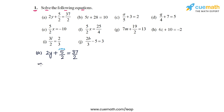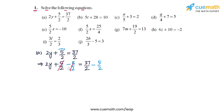The original LHS is 2y plus 5 by 2, the original RHS is 37 by 2, and we are going to subtract 5 by 2 from both sides. These terms on the LHS cancel out, and on the RHS we get 37 by 2 minus 5 by 2, which is 32 by 2, or 16. The equation we are left with is 2y is equal to 16.